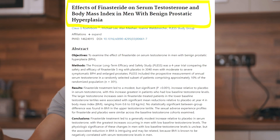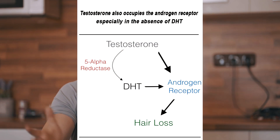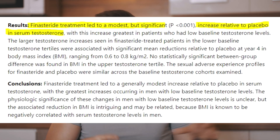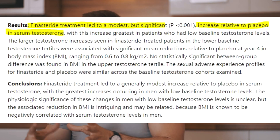A limitation of Finasteride in treating androgenic alopecia is that it works exclusively on DHT. Finasteride has zero effect on testosterone, which will in fact increase as a result of inhibiting 5-alpha reductase with Finasteride or Dutasteride. This progressive accumulation of testosterone in the scalp over time will still cause hair loss — maybe not as fast as with full DHT presence, but androgenic alopecia will progress. This was shown in a four-year PROSCAR trial where testosterone levels increased modestly to even significantly in patients with low baseline testosterone.